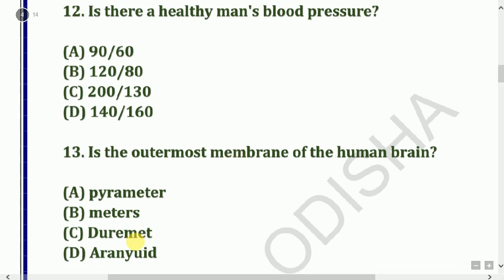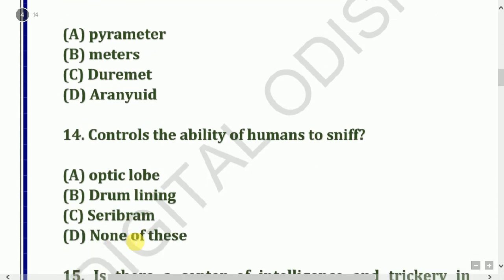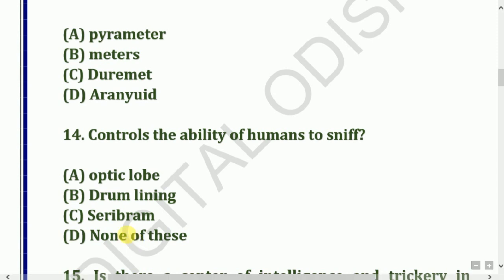Next question: What controls the ability of humans to smell? Options: Optic lobe, cerebrum, or none of these. Also, where is the center of intelligence and memory in humans?